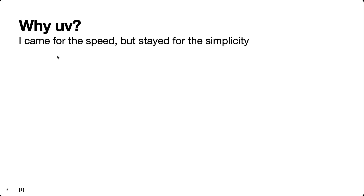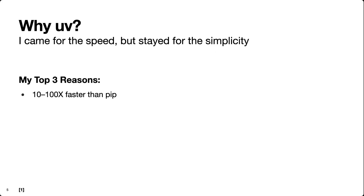This is one of the key selling points of uv, but of course it's not the only one. I came to uv for the speed but I stayed for the simplicity. Here are my top reasons for switching from Python's defaults over the past seven years to using uv. First, it's 10 to 100 times faster than pip — we just saw an example where it was literally 50 times faster.